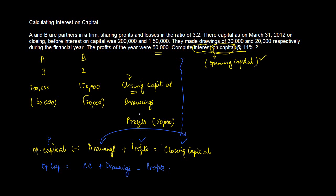So let us compute how much are profits which are applicable to each one of them. So their profit sharing ratio is 3 is to 2, so A will get 3, B will get 2, sum of these two is 5. So 3 fifth of 50,000 which is 30,000 for A and 2 fifth of 50,000 which is 20,000 for B.